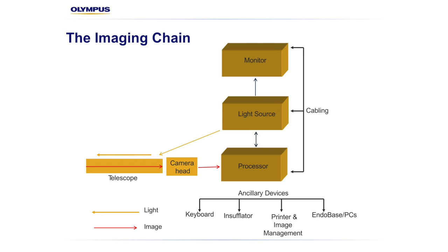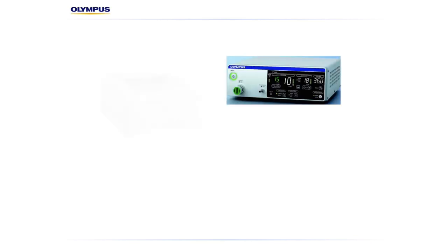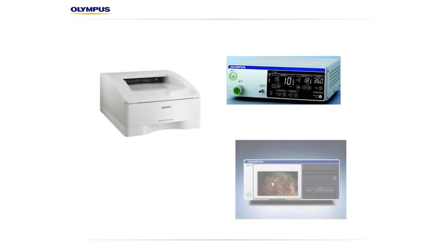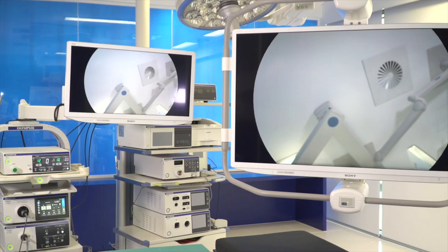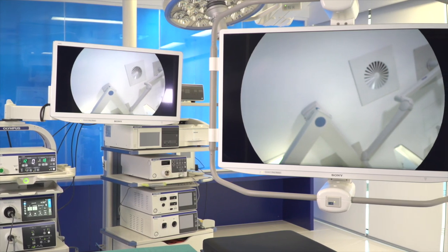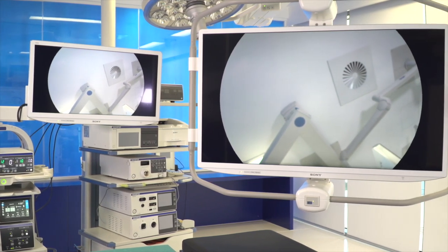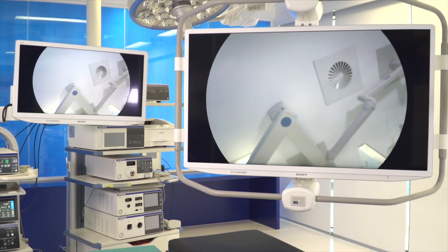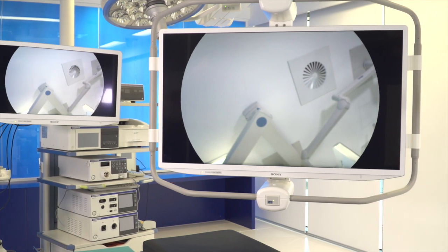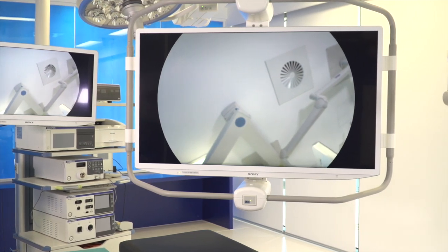The content of this video will be delivered from a surgical imaging perspective; however, the core concepts will be relevant across specialties. There are also a range of ancillary devices which can be used in conjunction with the imaging chain, but we will not discuss these in detail during this video. This video is focused upon the six essential components of the imaging chain and how they work together to generate the endoscopic image.